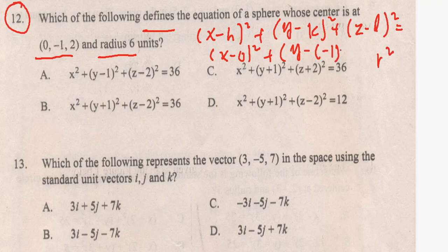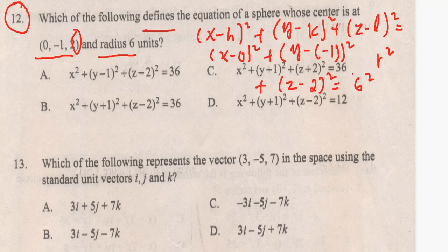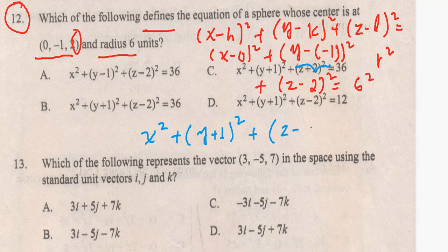The value of K is minus one. So substituting: x minus 0 squared is x squared, plus y minus (minus one) is y plus one, the whole squared, plus z minus two, the whole squared, is equal to six squared — which is 36.